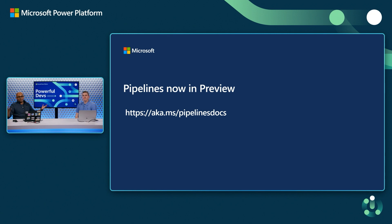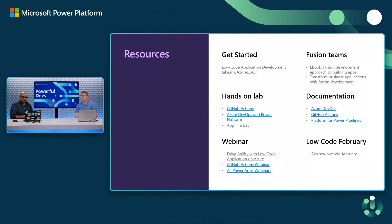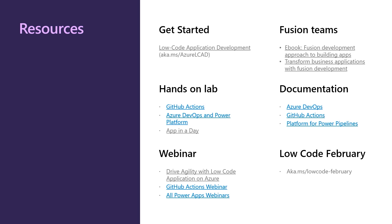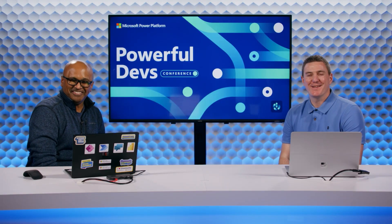Pipelines are now in preview. Before we sign off, here are a couple of resources available on the website: getting started with low-code application development, hands-on labs for everything demonstrated here, and documentation on how to get going with Power Platform Pipelines. And I'll repeat myself — we have Low-Code February, so please participate. The URL is aka.ms/low-code-February. Thank you all, hope to catch you soon on the other side. It's been fun.